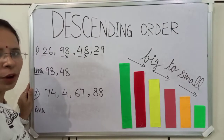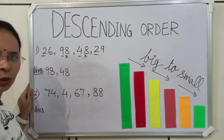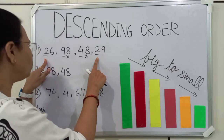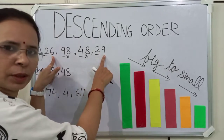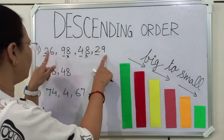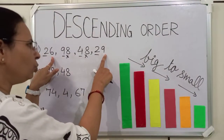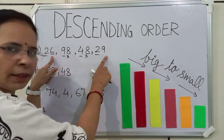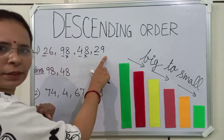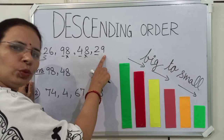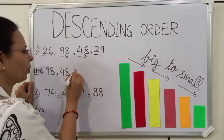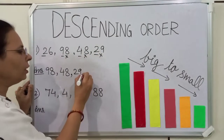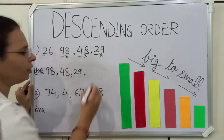Now, we have to find the biggest number among these two numbers. You can see here at tens place, both the numbers are same. So, what will we do? We will compare the ones place number. Here the ones place number is 9 and here the ones place number is 6. As you know, 9 is greater than 6. So, 29 is bigger than 26. So, we will write 29. We have written 29, so we will cut it. Now, what is left? 26. At last, we will write 26.